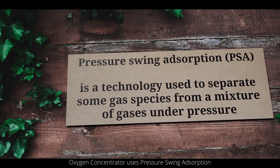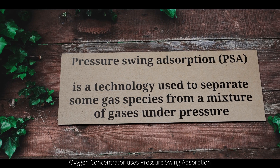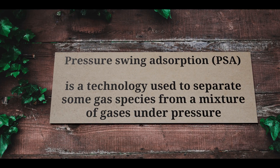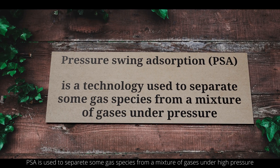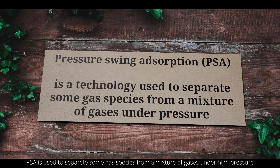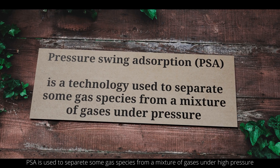An oxygen concentrator uses Pressure Swing Absorption, or PSA, technology. PSA is used to separate some gas species from a mixture of gases under high pressure.